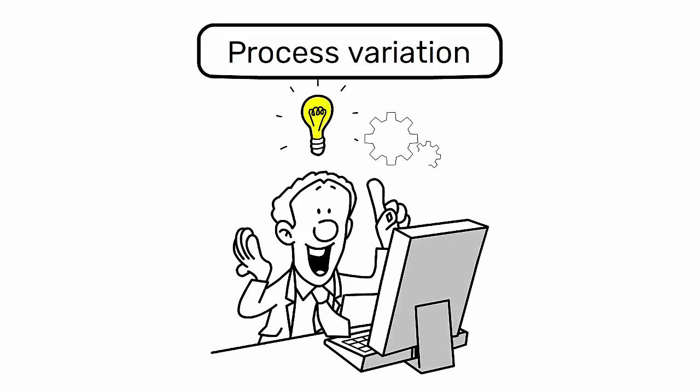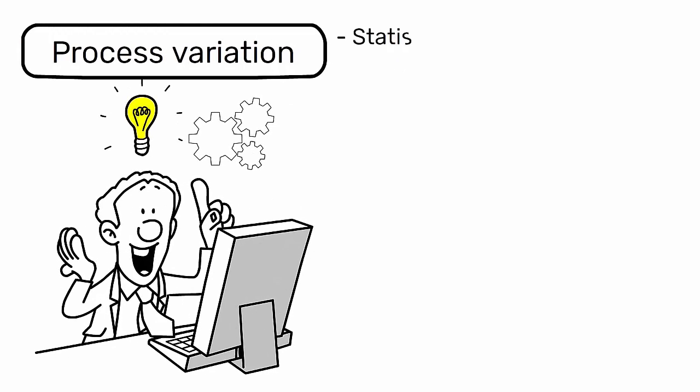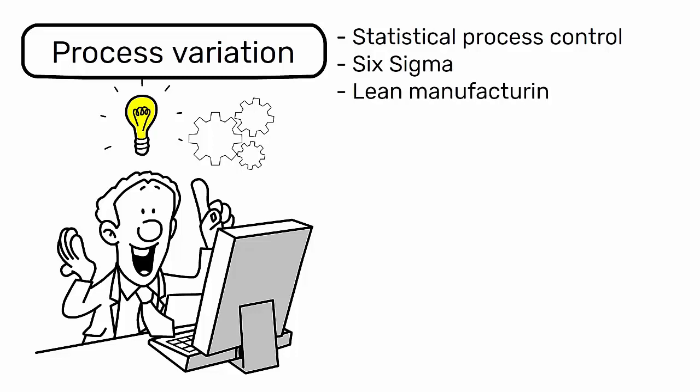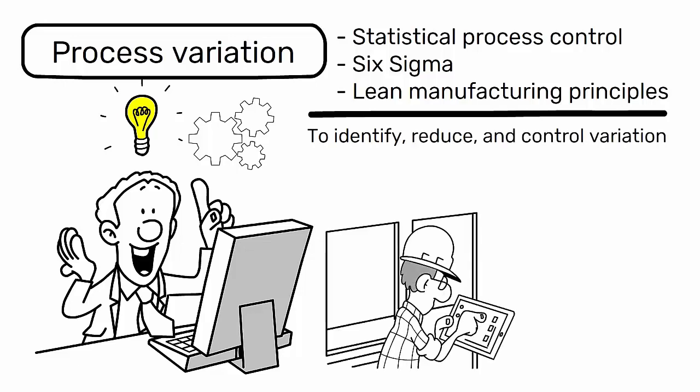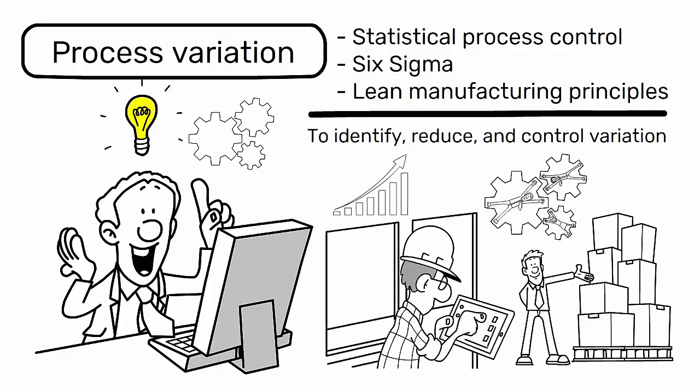To manage process variation, industrial engineers use a variety of tools and techniques, such as statistical process control, Six Sigma, and lean manufacturing principles. These approaches aim to identify, reduce, and control variation, leading to more stable and efficient processes.